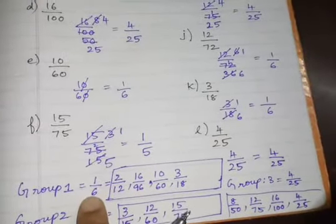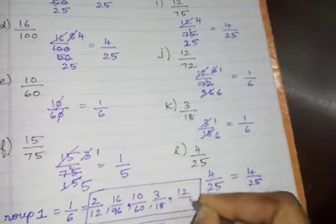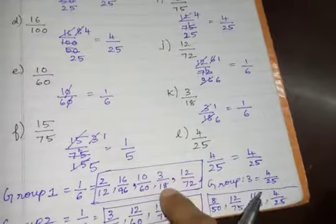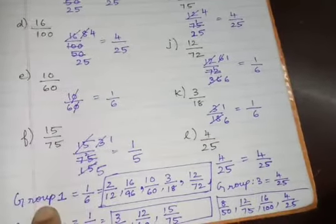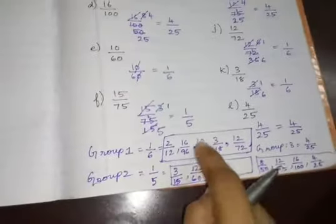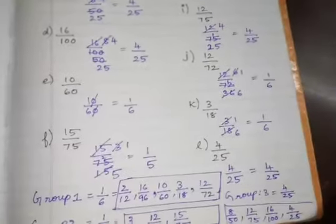Listen, children. In the group with simplest form 1 by 6, I didn't include 12 by 72 — I forgot to include it. So you can include that also. Totally, 1 by 6 has: 2 by 12, 16 by 96, 10 by 60, 3 by 18, and 12 by 72 — these 5 numbers belong to group 1. These 3 numbers belong to group 2, and these 4 numbers belong to group 3. We find the simplest form of all the given numbers and segregate them into 3 different groups: one with simplest form 1 by 6, another with 1 by 5, and another with 4 by 25.